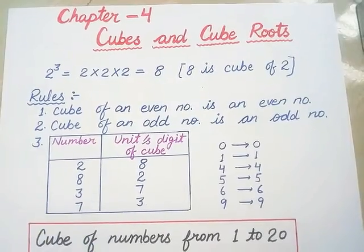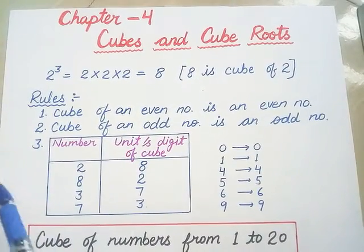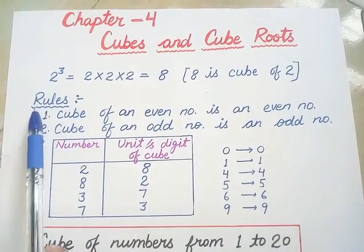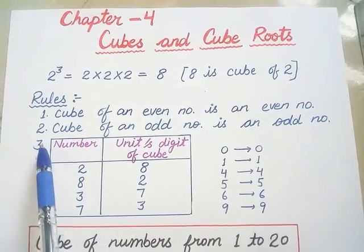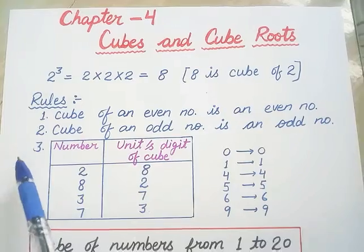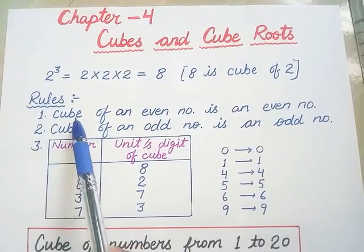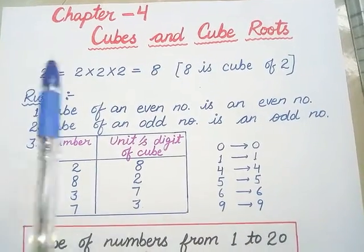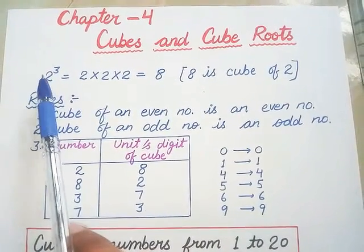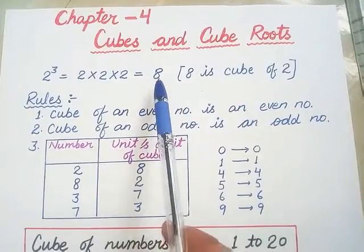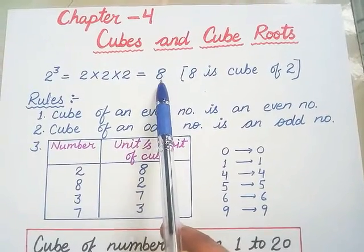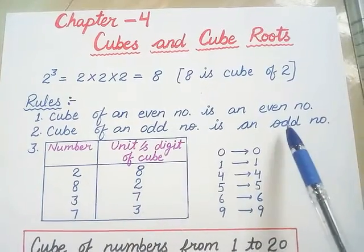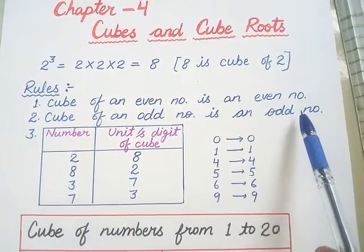Next, before doing our exercise, we will study the rules for cube and cube roots. You have to learn 3 rules properly. First of all, cube of an even number is also an even number. For example, 2 is an even number, so its cube will be an even number. This way, an odd number's cube will be an odd number.